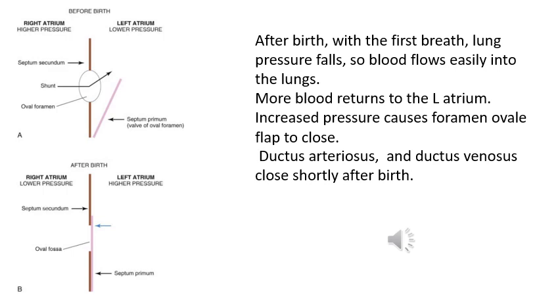As the first breath is taken, the lungs expand with air and lung pressure falls. This allows blood to flow more easily into the lungs. After reaching the lungs, the blood returns to the left atrium, which causes pressure to be higher on the left of the atrial septum than on the right. This pressure differential and the increase in oxygen levels cause the foramen ovale, the ductus arteriosus, and the ductus venosus to functionally close shortly after birth.